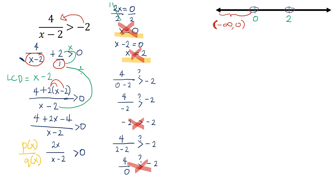The second interval includes all real numbers from 0 to 2, excluding both endpoints — open parentheses on both sides since 0 and 2 are open circles. The third interval is from 2, excluding 2, to positive infinity — again with open parentheses on both ends.